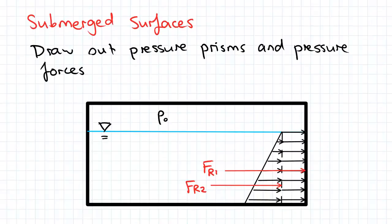For submerged surfaces, always draw out the pressure prism and the pressure forces, and your distances as well, like dr1, dr2. Always draw them out because not only does it help you with sum of moments around a point, it illustrates to the marker what forces you're looking at.